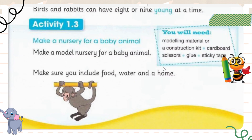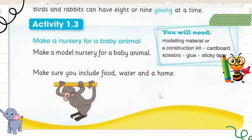Here is an activity: make a nursery for a baby animal including food, water, and a home. Instead, I will ask you to name five animals and their baby names — animals we haven't discussed, for example horse, sheep, penguin, crocodile, whale, or dolphin. You can use Google, books, or ask your elder sister, brother, or mother. I hope you liked this video. That's it for today's lesson. We will meet tomorrow with another lesson. Keep sharing and keep liking!